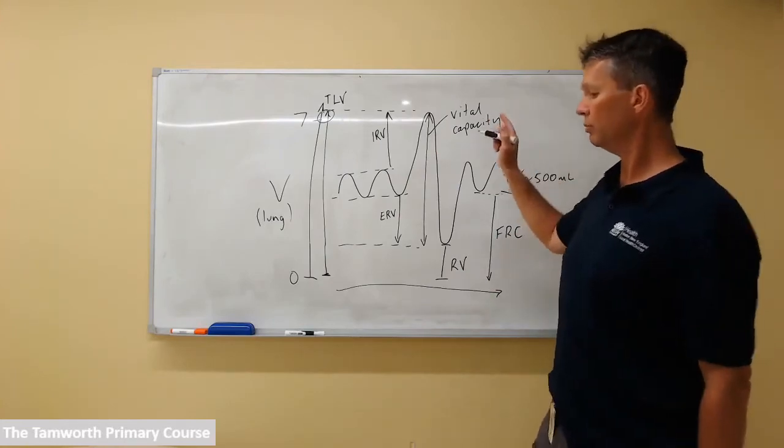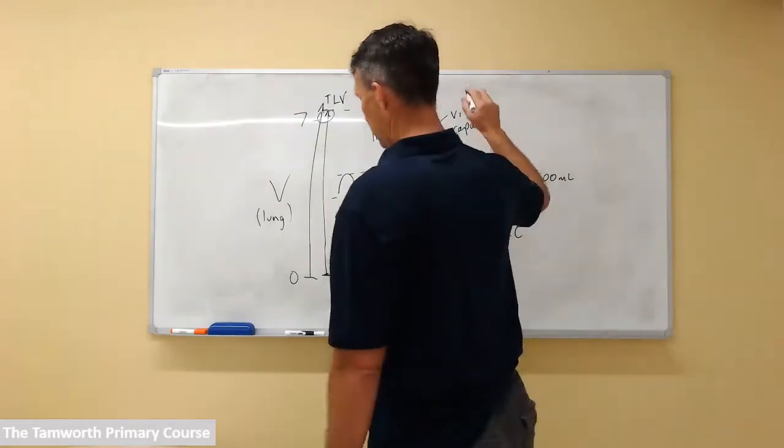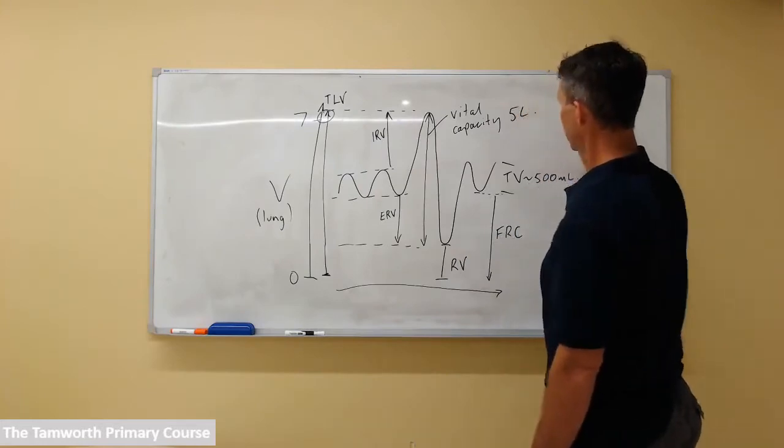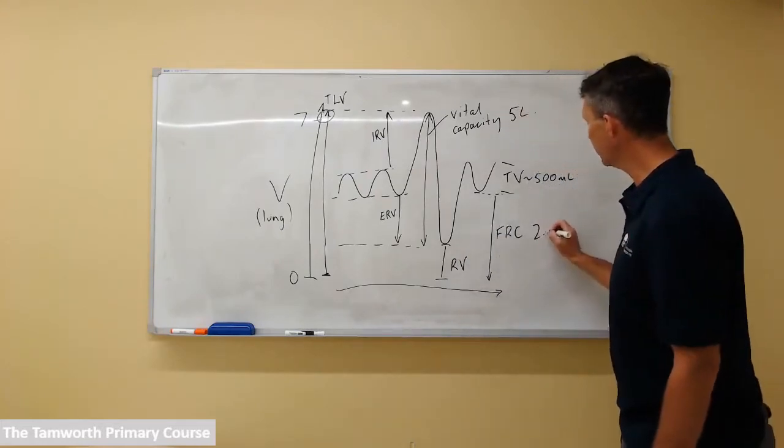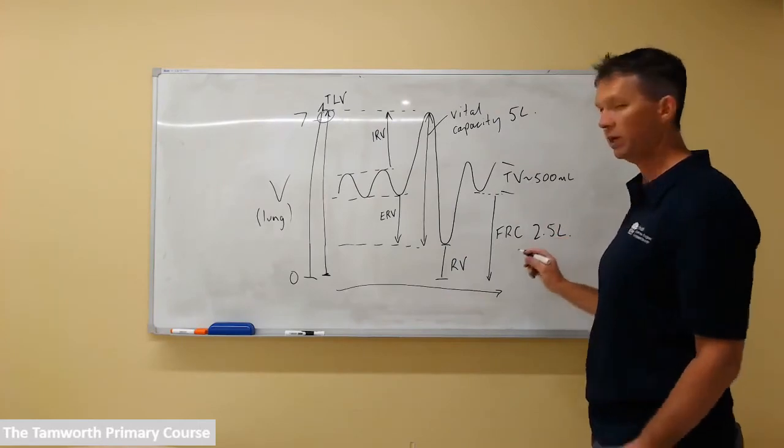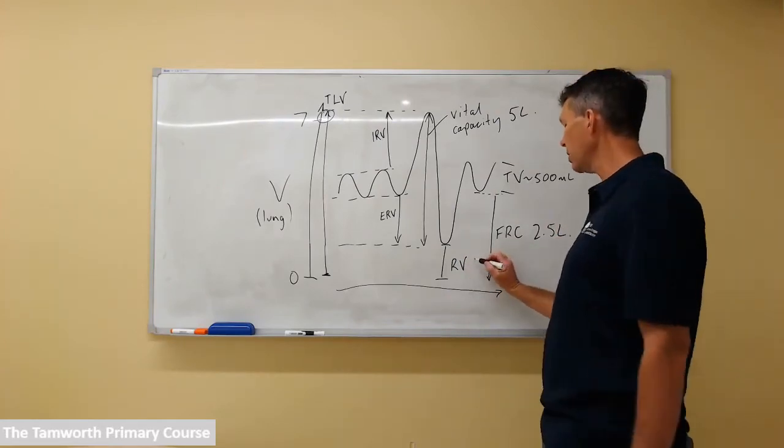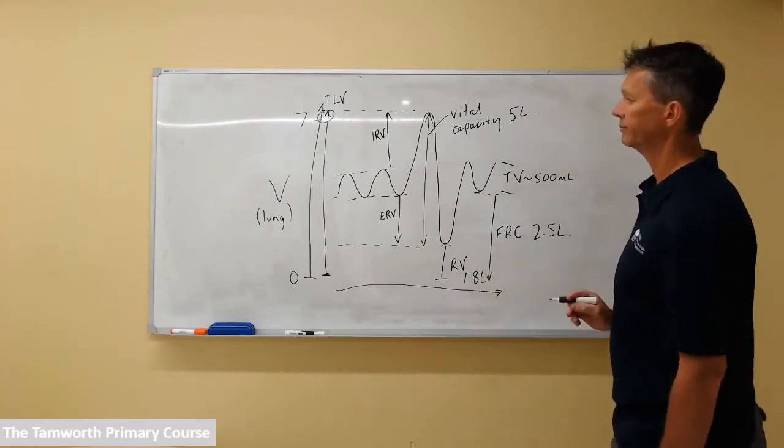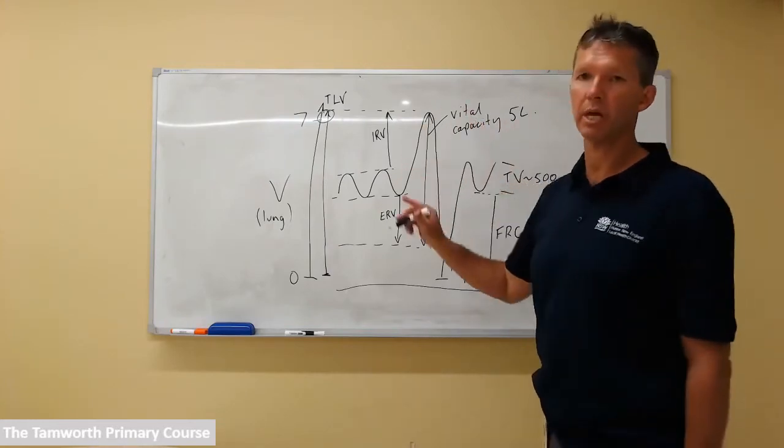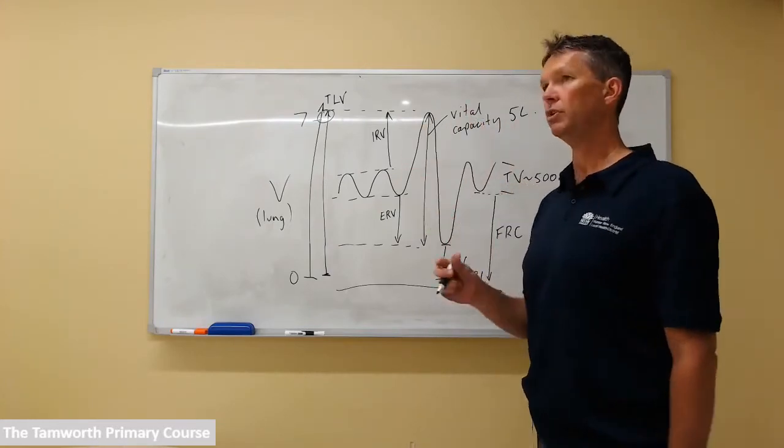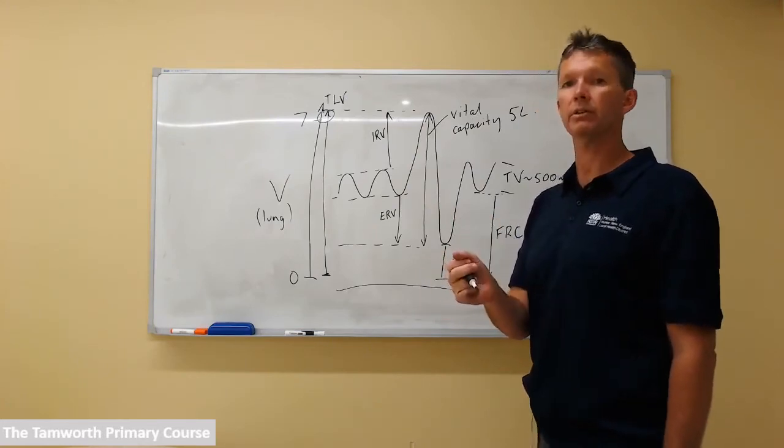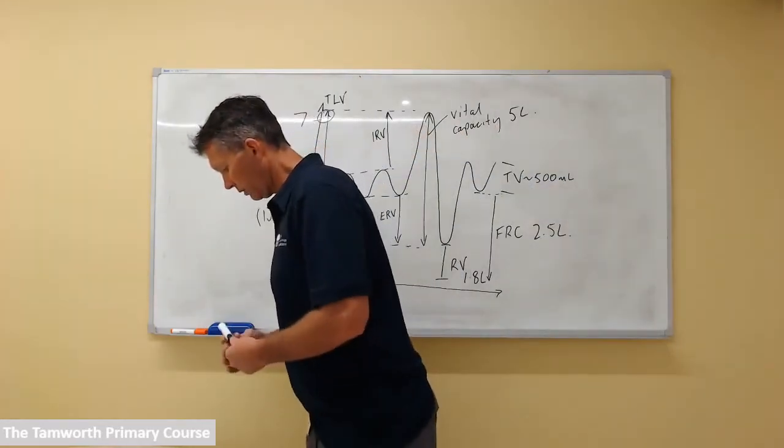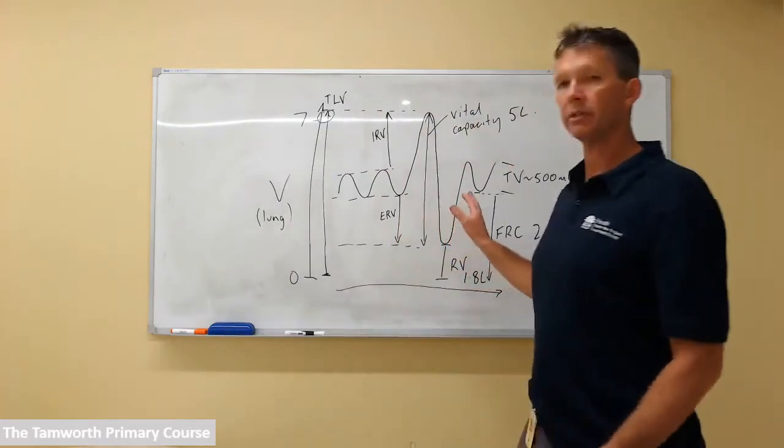To fill in some volumes, our vital capacity, most people can muster about five liters. FRC is approximately 2.5 liters, depending on the lung. The residual volume can be about 1.8 liters. Have some numbers in your head. They vary textbook to textbook. If you're having difficulty, remember the ventilator settings that you've used before.